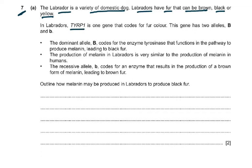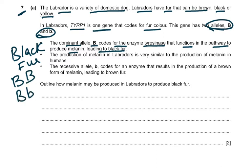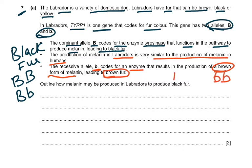In Labradors, TYRP1 is one gene that codes for fur color. The gene has two alleles, big B and small B. The dominant allele, big B, codes for the enzyme tyrosinase that functions in the pathway to produce melanin, leading to black fur. So black fur will have big B big B or big B small B, because the dominant leads to black fur. The recessive allele, small B, codes for an enzyme that results in the production of the brown form of melanin, leading to brown fur. So brown fur will always be small B small B — it can't be anything else.